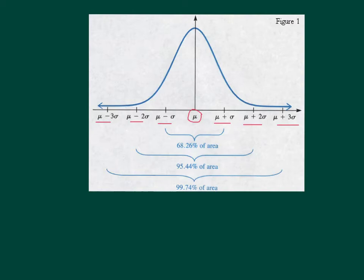What you'll notice is that about 68% of our data lie within one standard deviation of the mean. So their z-scores are between negative one and one.